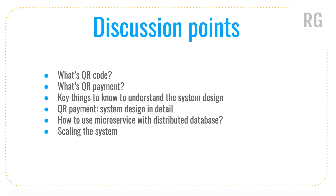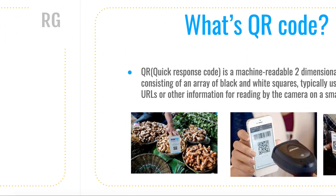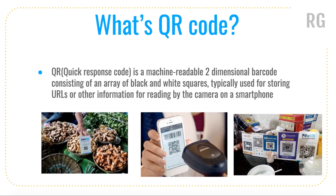Here are the key discussion points: what is a QR code, what is QR payment, key things to know to understand the system design, QR payment system design in detail, how to use microservices with distributed database, and scaling the system. So what is a QR code? QR stands for Quick Response code, which is a two-dimensional barcode.